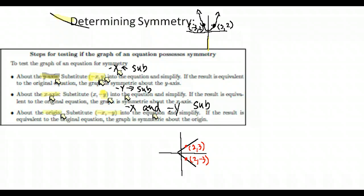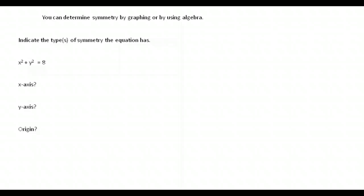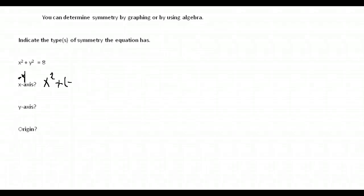These recordings can be paused or fast-forwarded at any time. Let's try the first question: indicate the type of symmetry this equation has — is it symmetric with respect to the x-axis, y-axis, or origin? For the x-axis, we substitute negative y for all the y's. The x will not change, but we put negative y in place of positive y, then simplify anything that can be simplified.